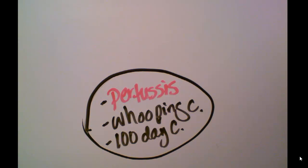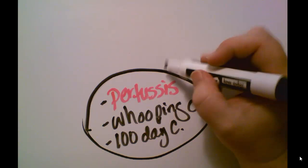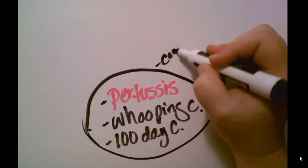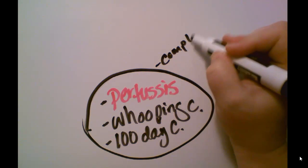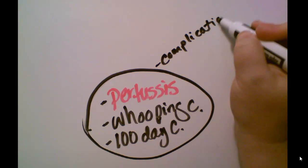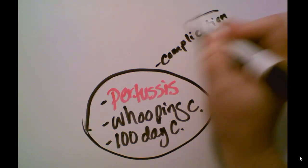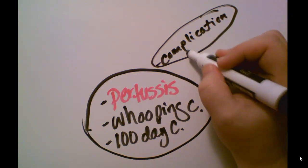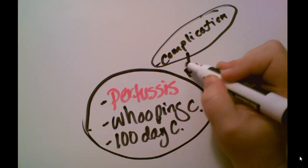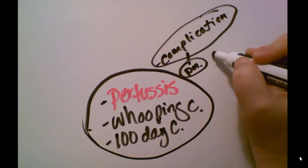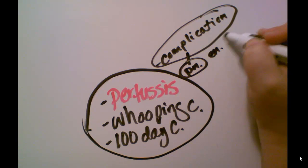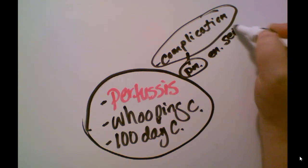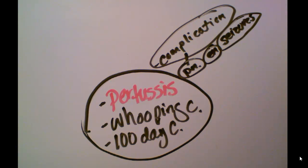Then I want to start thinking about the subtopics. One of them might be complications. I know that the complications from pertussis include pneumonia, encephalopathy, and seizures. I'm not going to spell all of those out — as long as I can remember what I'm talking about.